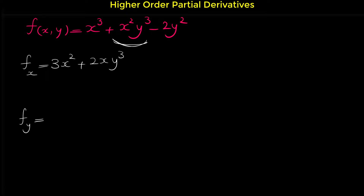What is the derivative of x squared y cubed when we take the derivative with respect to y? Because we take the derivative with respect to y, x squared is a constant coefficient for y cubed, and the derivative of y cubed is 3y squared. So the derivative of x squared y cubed with respect to y is 3x squared y squared, and finally the derivative of negative 2y squared is negative 4y.